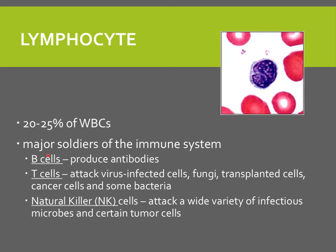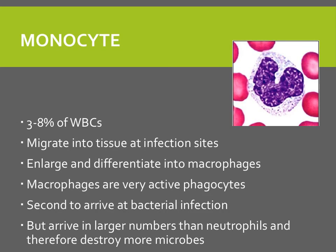These get discussed in more detail when we get to the immune chapter. Monocytes, another agranular leukocyte, make up 3 to 8% of white blood cells. They migrate into tissue at infectious sites and enlarge and differentiate into macrophages. Macrophages are very active phagocytic cells and are the second to arrive at a bacterial infection. Even though they are second to arrive, they arrive in more numbers than neutrophils and are therefore capable of more destruction of microbes at that site.